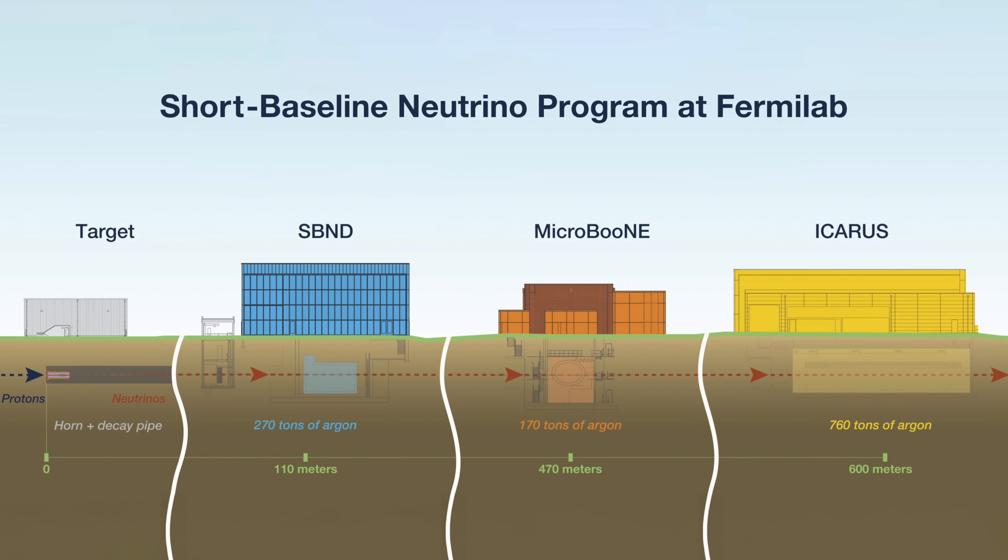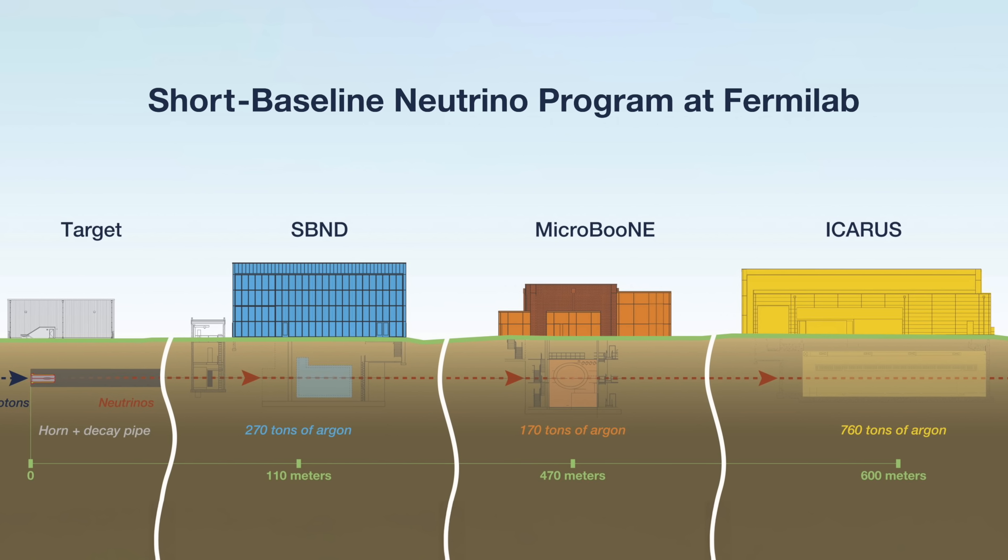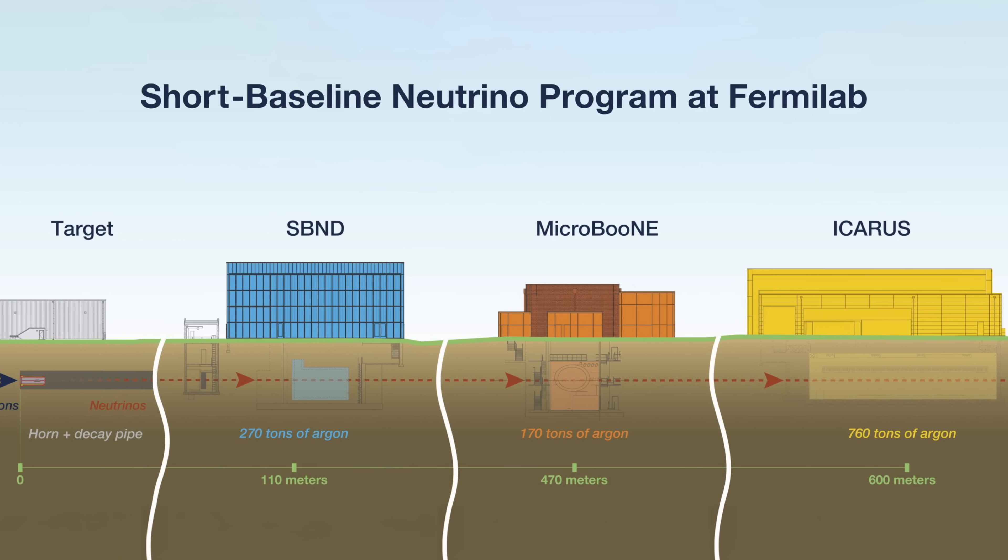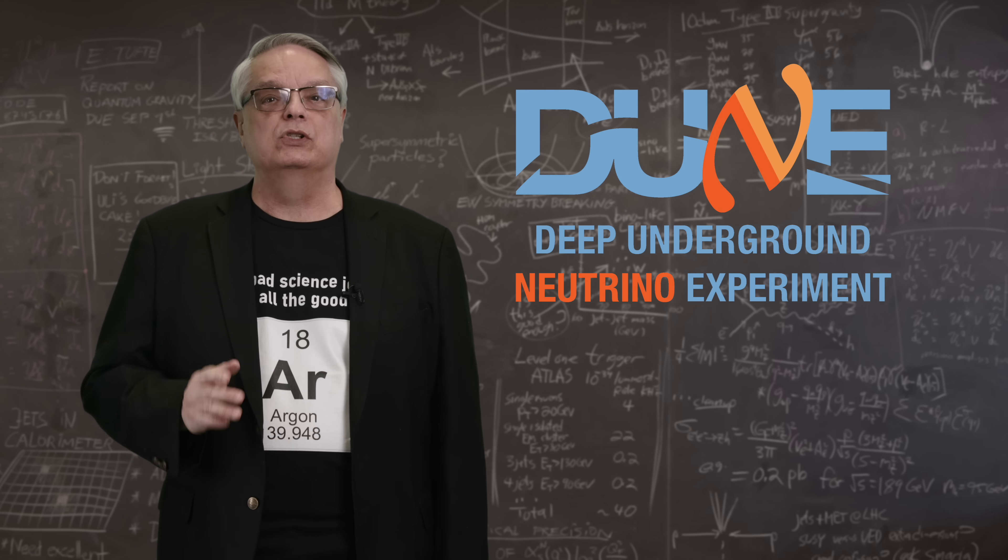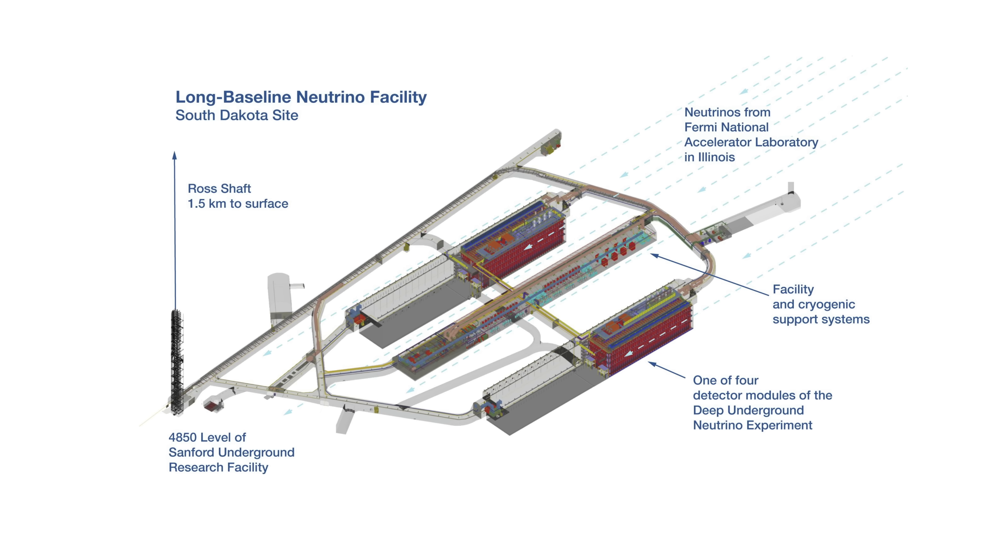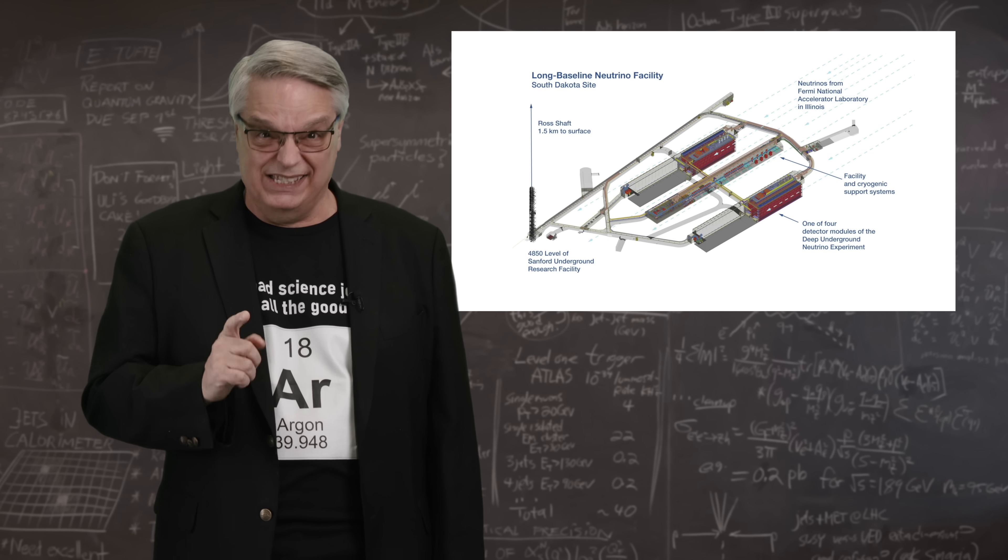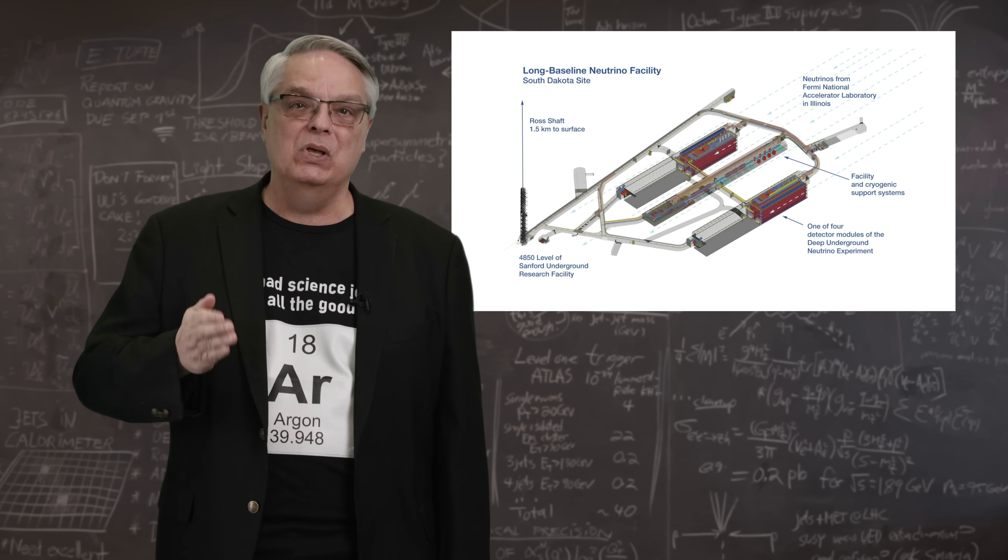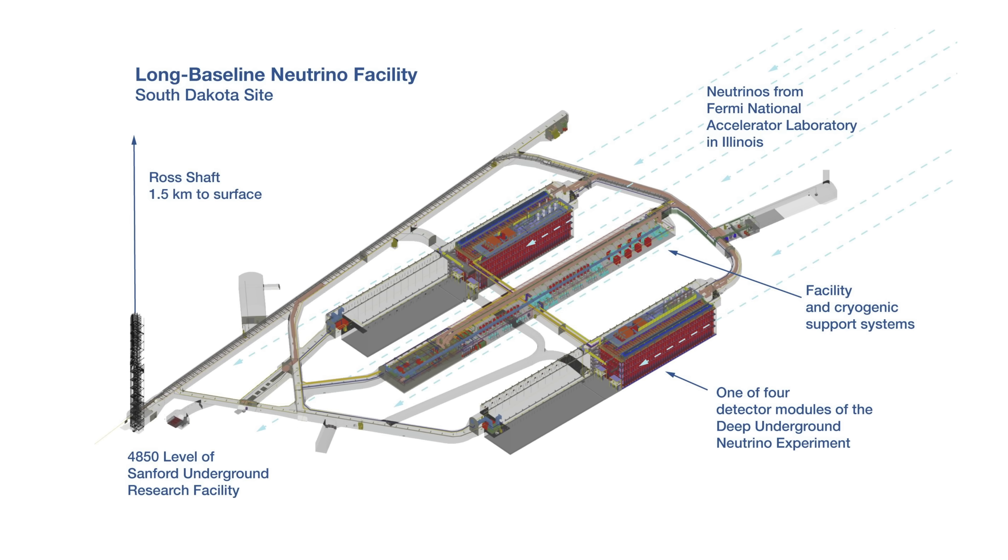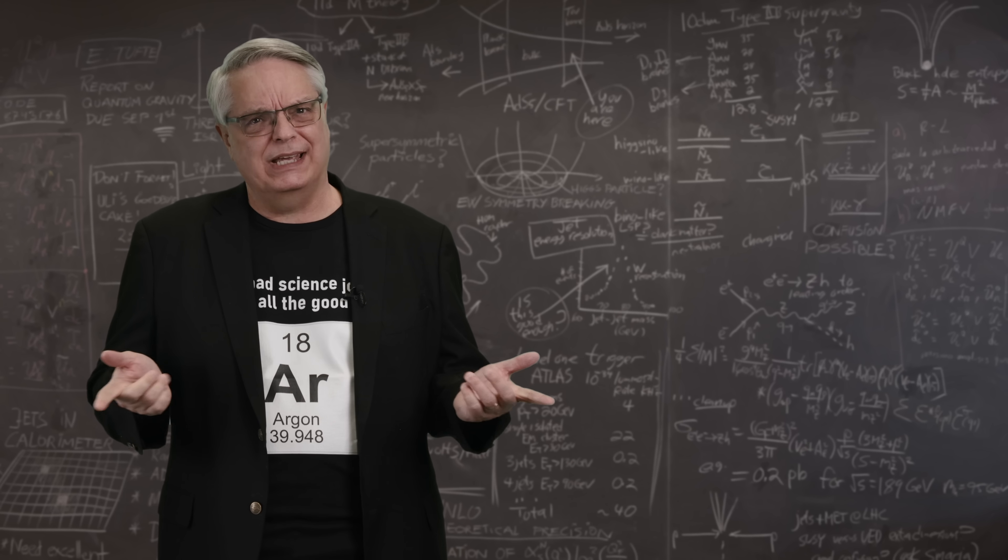There is the MicroBooNE detector, which used 170 tons of liquid argon, and then there's SBND and Icarus, which use 270 and 760 tons, respectively. But those detectors are small potatoes compared to the DUNE detector, which is currently under construction. When completed, the DUNE detector is expected to use a staggering 70,000 tons of liquid argon. That's 50,000 cubic meters or 1.6 million cubic feet for our American viewers. To give a sense of scale, that's the volume of about 110 typical American three-bedroom homes. So where do scientists get that much liquid argon?